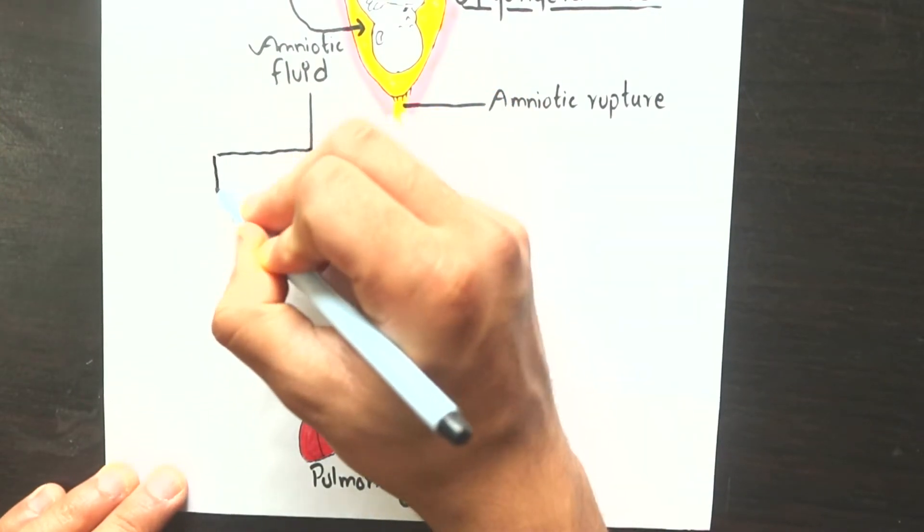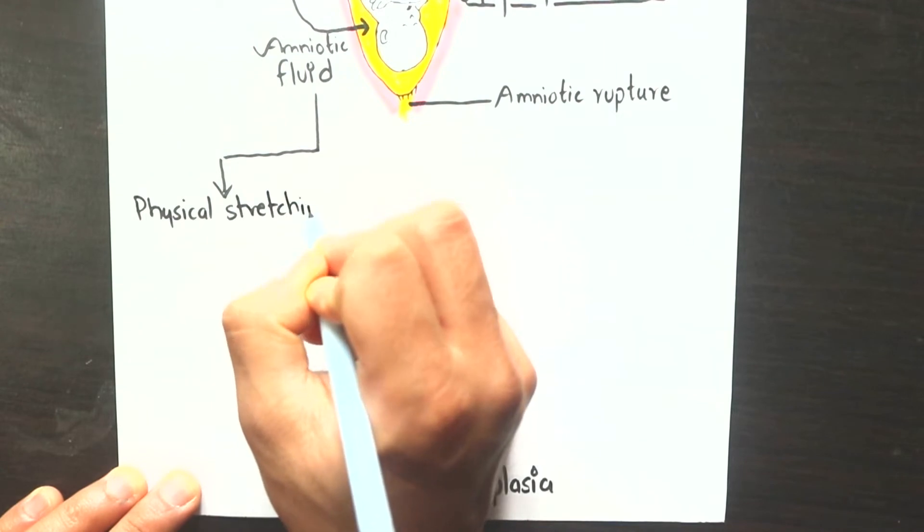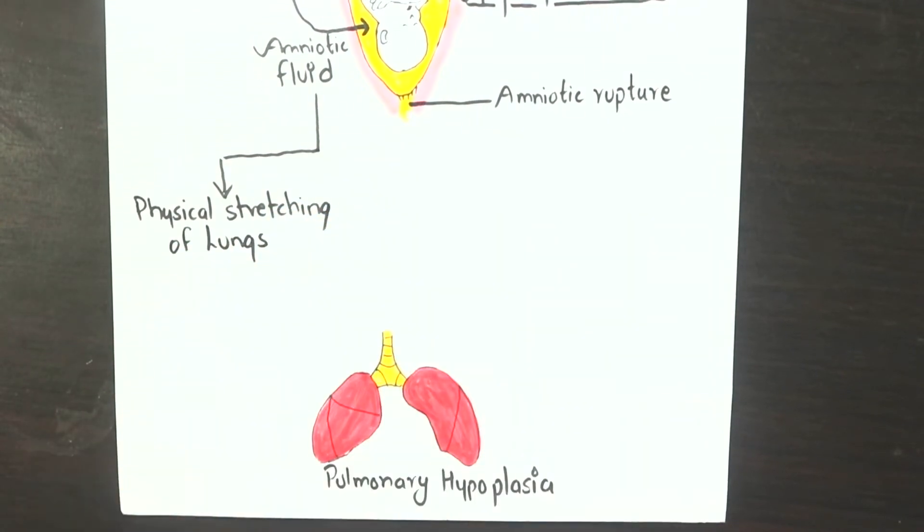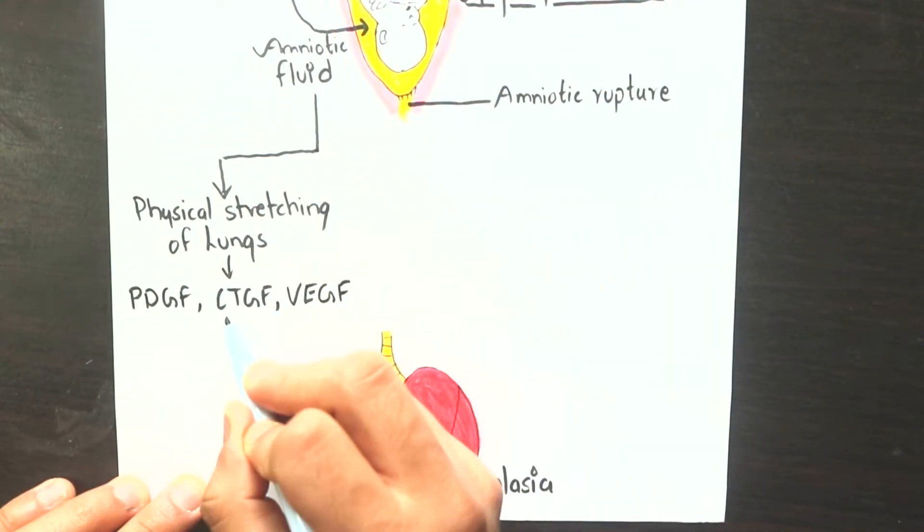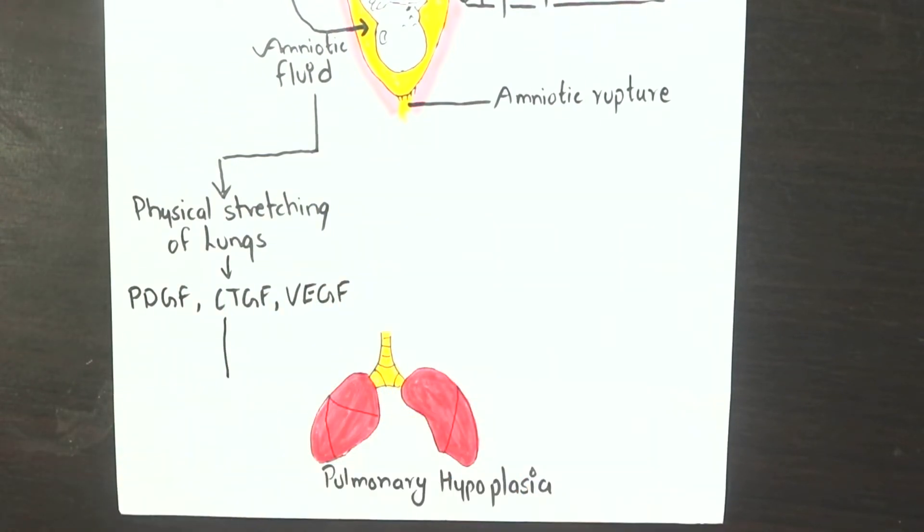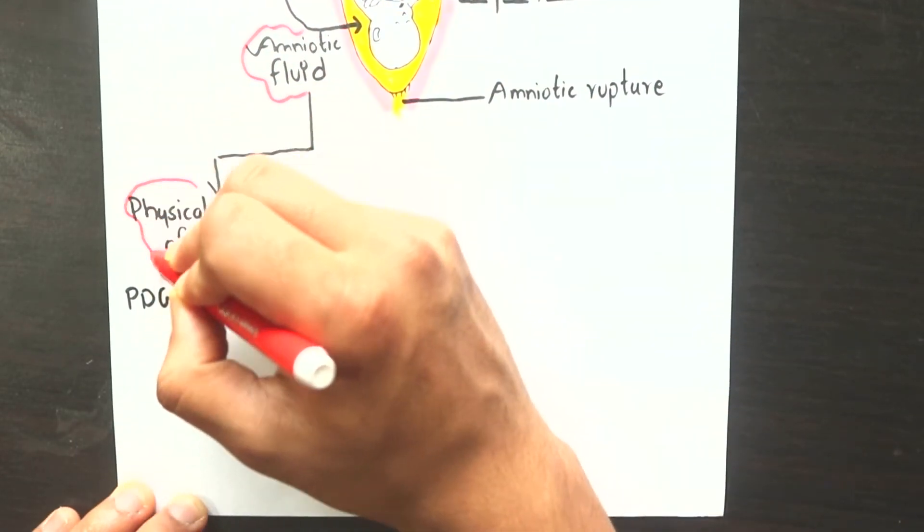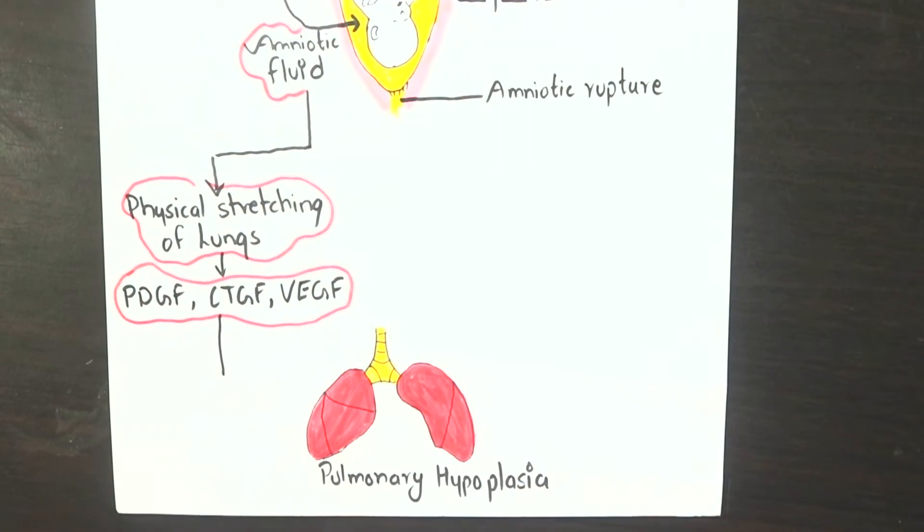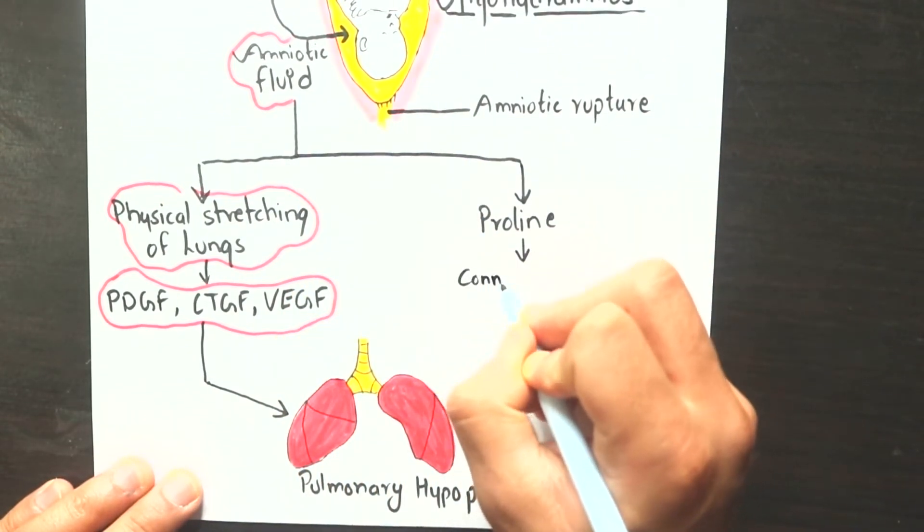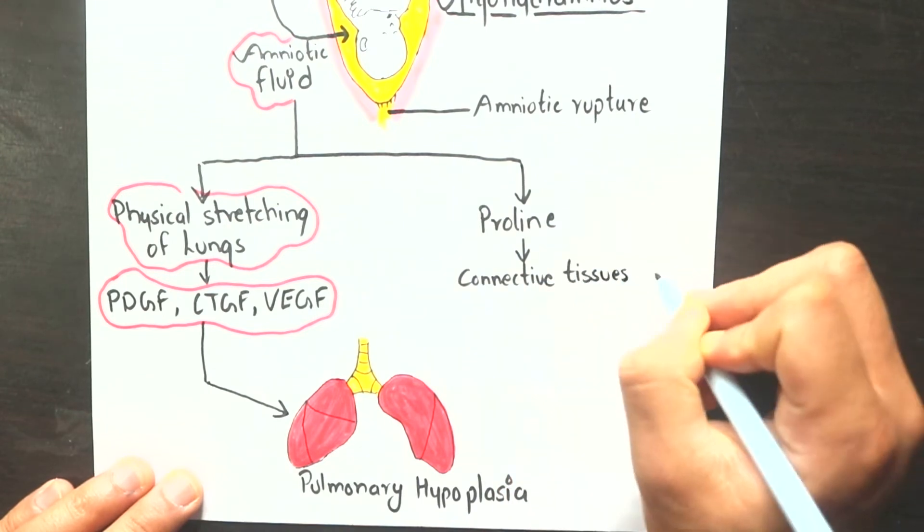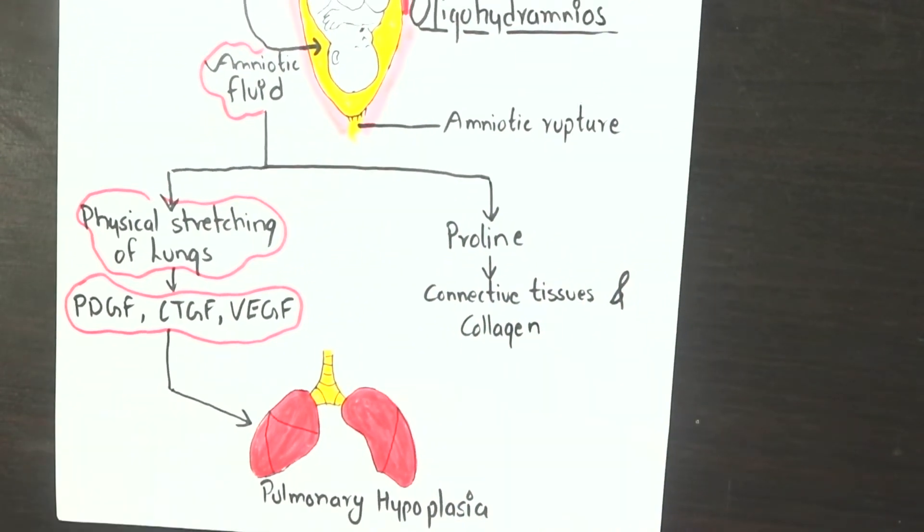Amniotic fluid induces mechanical strain to the lung by physically stretching it. It results in production of different growth factors such as platelet-derived growth factor, connective tissue growth factor, and vascular endothelial growth factor. These growth factors make major structural components of the lung. Also, the amniotic fluid contains amino acid proline, which helps in the formation of connective tissues and collagen in lungs.